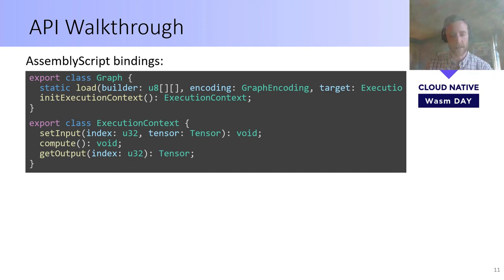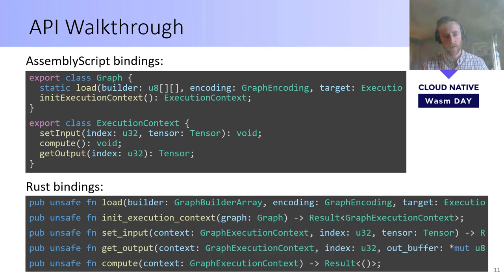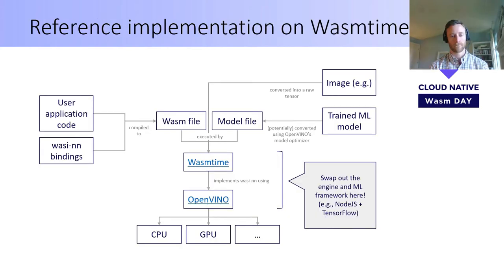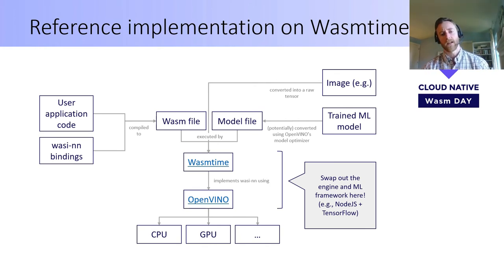Here's an example of those bindings in AssemblyScript. What we're trying to do is make it a lot easier for users to use WASI-NN from their WebAssembly applications. Here are the same bindings in Rust. You can see that the same functions are exposed, but with higher-level constructs which should make it easier to use.